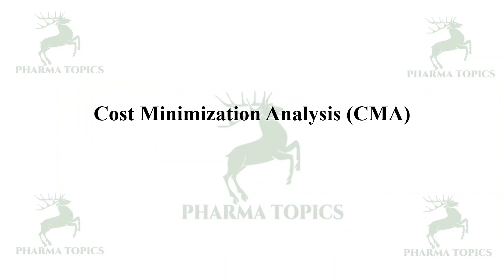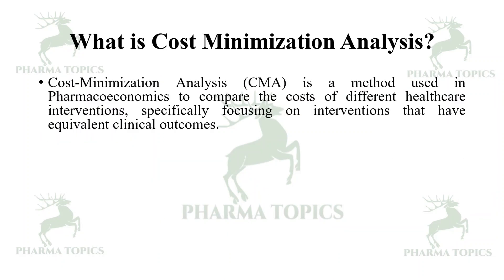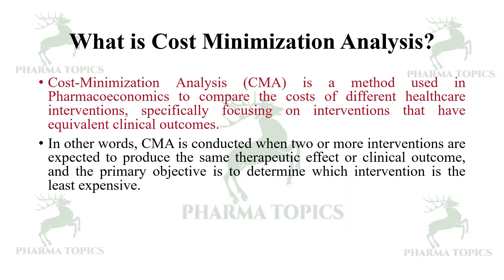Next is cost minimization analysis (CMA). CMA is a method used in pharmacoeconomics to compare the costs of different healthcare interventions, specifically focusing on interventions that have equivalent clinical outcomes. CMA is conducted when two or more interventions are expected to produce the same therapeutic effect or clinical outcome, and the primary objective is to determine which intervention is least expensive.